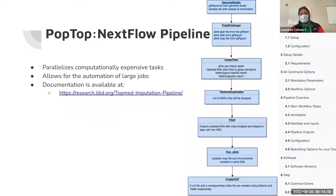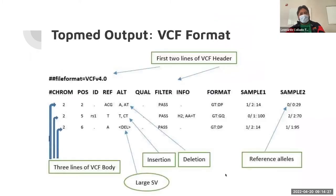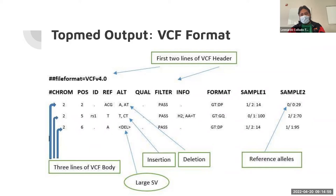Pop Top is implemented as a Nextflow pipeline, which allows us to parallelize computationally expensive tasks and automate all the different jobs for DNA genotype data processing. It's documented at a Bookdown website. It involves a lot of different steps, but in the end it creates a VCF file — the Variant Call Format — which is a pretty generic format used for storing DNA genotype data. There are a lot of different properties in this format that you can use for QC and data filtering, for example if you're only interested in insertions in certain regions versus large variants.